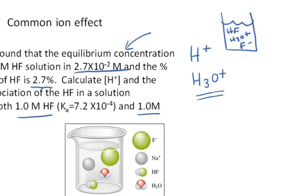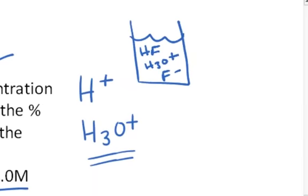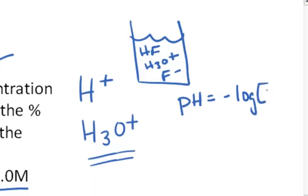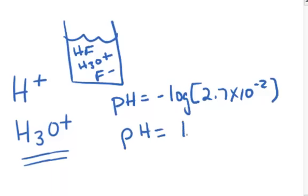When you just have hydrofluoric acid at a one molar concentration, the hydronium ion concentration was found to be 2.7 times 10 to the minus 2, and the percent dissociation was 2.7%. I can calculate the pH of that solution: pH equals negative log of the hydronium ion concentration, which is negative log of 2.7 times 10 to the minus 2, giving a pH of 1.6. That's a pretty acidic solution.